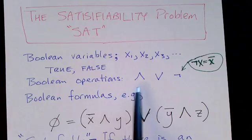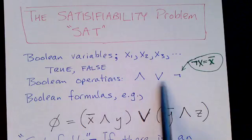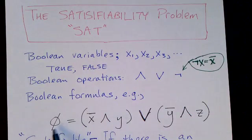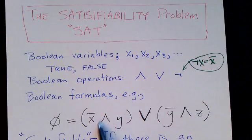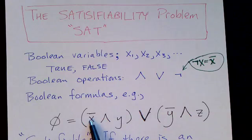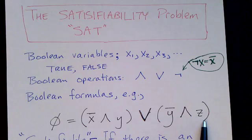And out of variables and logical operators, Boolean operators, we can build formulas. Here's a formula. We'll call it phi. And it just says, remember this is conjunction, looks like an A, so it's AND. This is disjunction. It's an OR. So, not X and Y OR, not Y and Z.